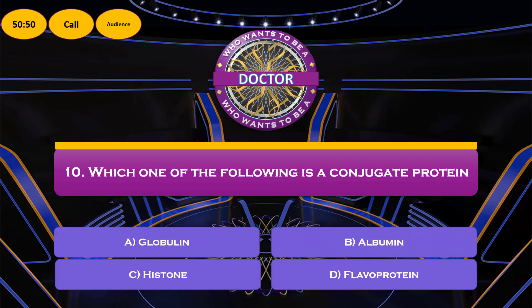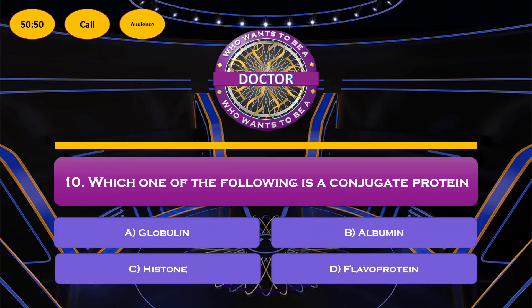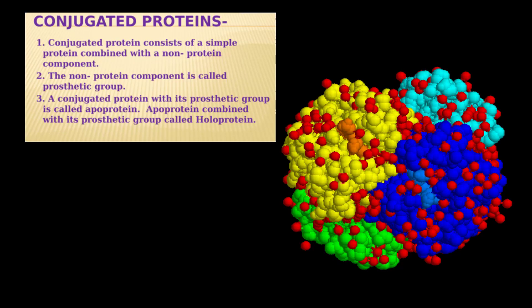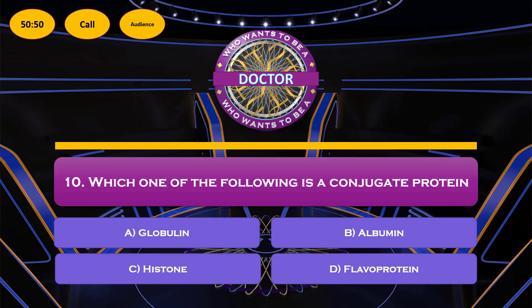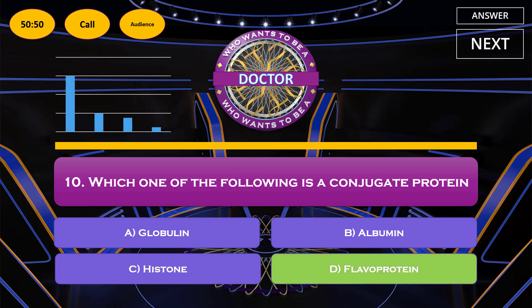Question number 10: which one of the following is a conjugated protein? First, what are conjugated proteins? Conjugated proteins are proteins that function in interaction with other chemical groups attached by covalent bonds or weak interactions. The options are: option A: globulin; option B: albumin; option C: histone; option D: flavoprotein. The correct answer is option D, flavoproteins.